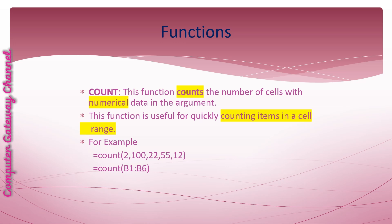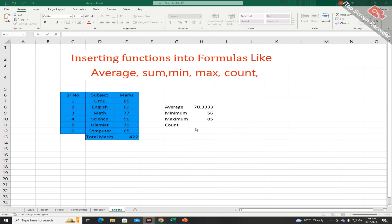COUNT function. This function counts the number of cells with numerical data in the argument. It is useful for quickly counting items in a cell range. The first example gives us the result 5. The second example counts numbers from B1 to B6 and gives us the result 6. To get the number of items in your worksheet, the COUNT function is used. By following the same procedure you can get the total count of subjects.